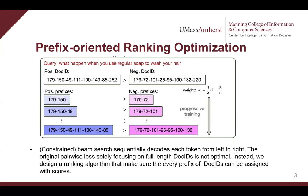Generative retrieval relies on constrained beam search for retrieving relevant document IDs given a query. However, constrained beam search is a sequential decoding algorithm that decodes each token from left to right. The traditional learning-to-rank loss is solely aimed at making full-length positive document IDs assigned with high scores, which is not optimal, because this loss cannot guarantee that their prefixes can also be assigned with high scores, which might cause relevant document IDs to be discarded in early decoding steps. Instead, we design a new ranking algorithm based on multi-task learning and progressive training, which ensures every prefix of document IDs can be assigned with a high score.